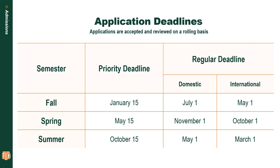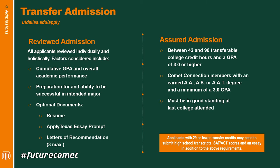As far as when you should get all of this done, you can see there are priority deadlines for every term, and there are also regular deadlines for both domestic and international students. We highly recommend that you try to get everything turned in by the priority deadline to guarantee ample time to apply for scholarships and get financial aid in order. However, if you can't meet that priority deadline, please make sure your application and all supporting documents are in by the regular deadline at the latest.